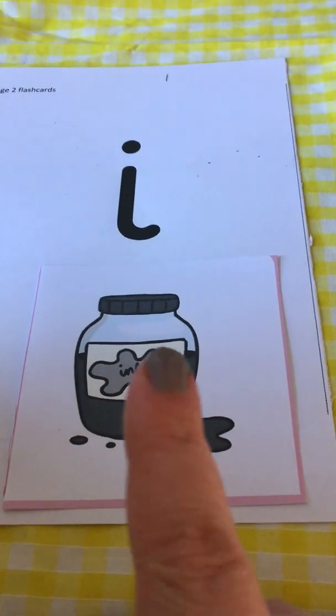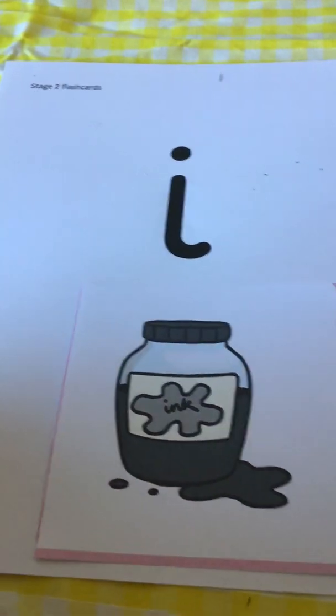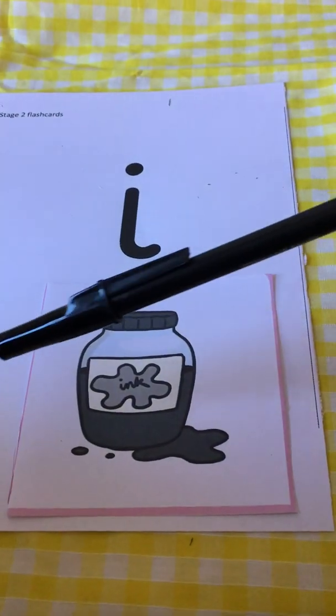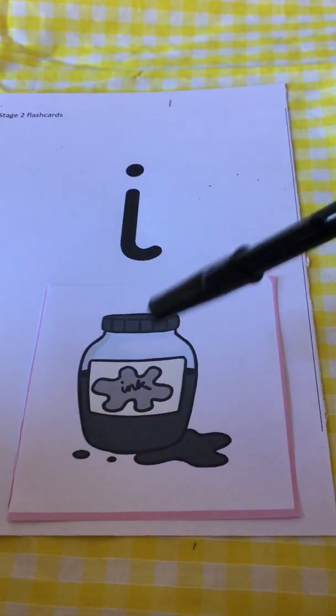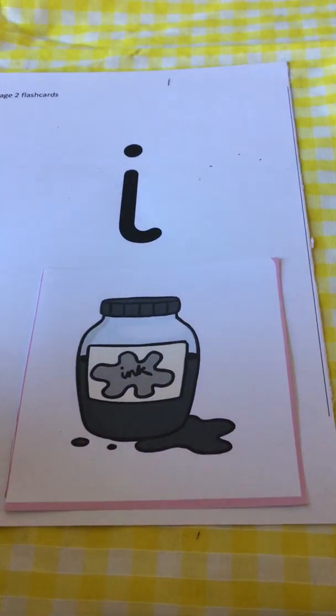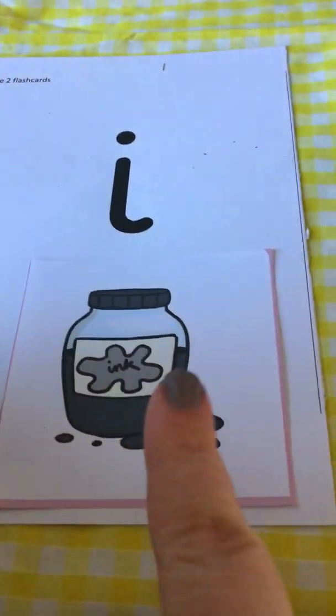I. I. Ink. Ink is what you get inside a pen. Ink is inside a pen and that's what makes your writing show up on the paper. Ink.